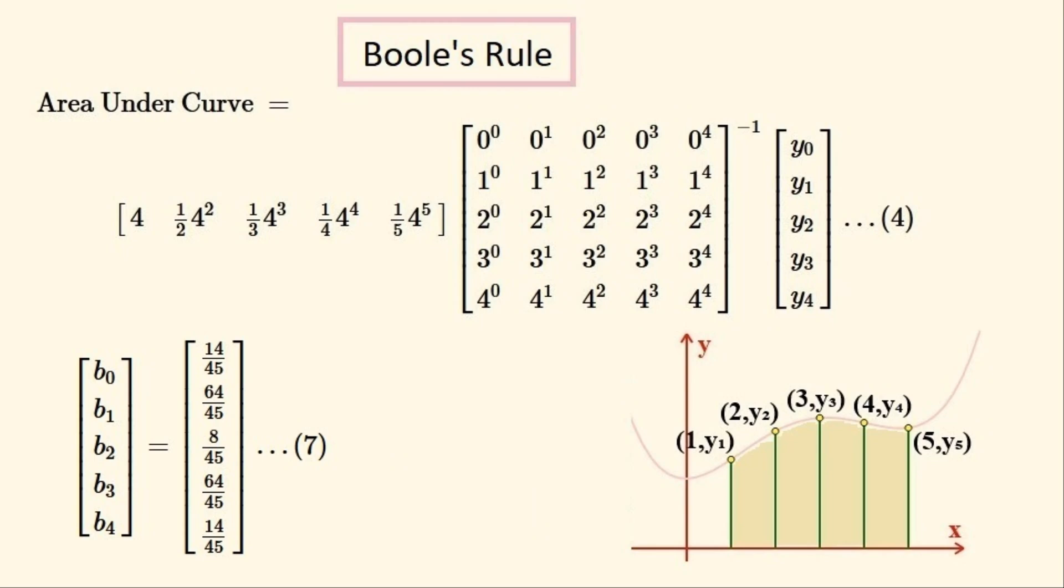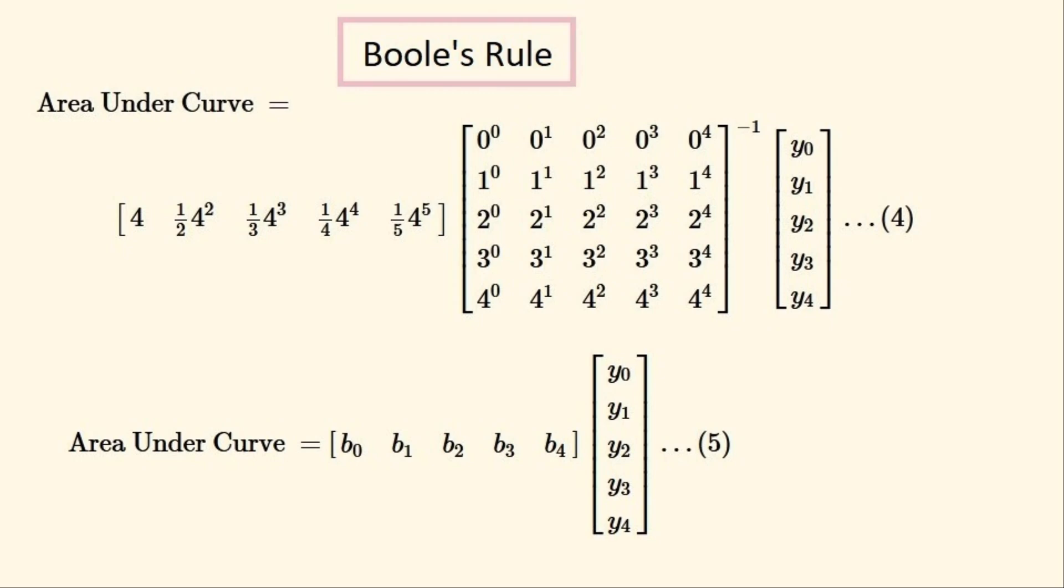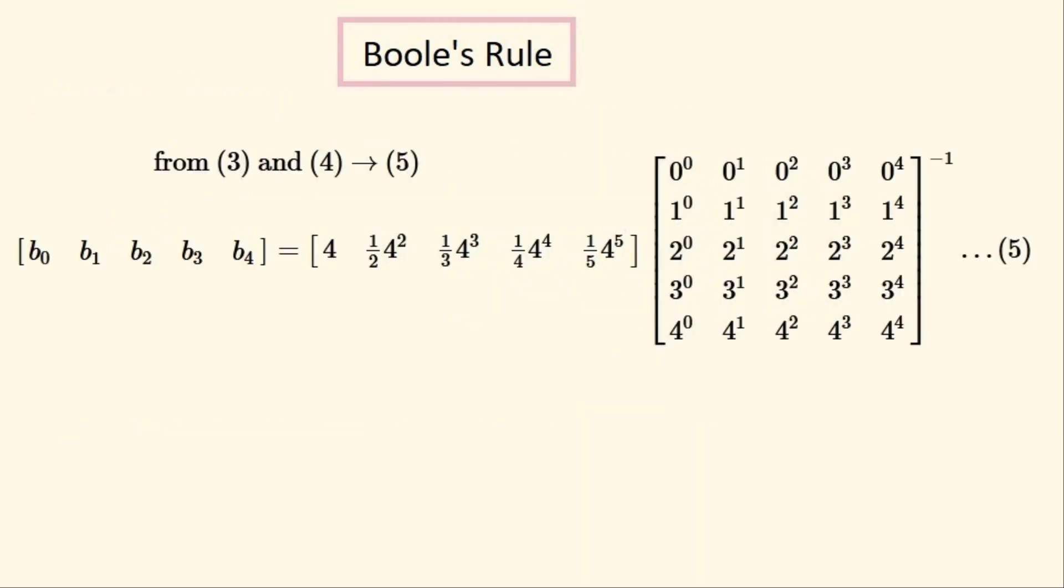This is a matrix equation describing how to calculate the values of the coefficients of Boole's rule, which I named B0 to B4. We'll use this equation which has been calculated before to find these values. This is the matrix equation which finds the area under the curve in terms of the function values or heights of the function and the Boole's rule coefficients. We can use both of these equations to get this equation.